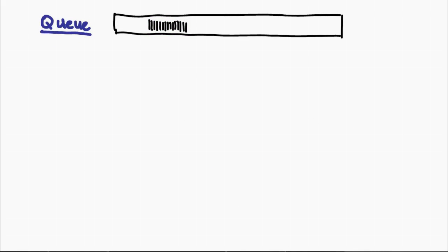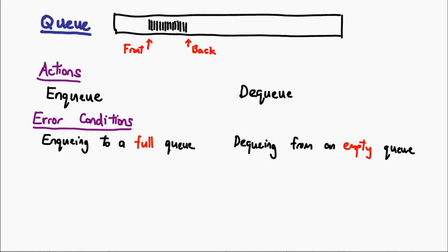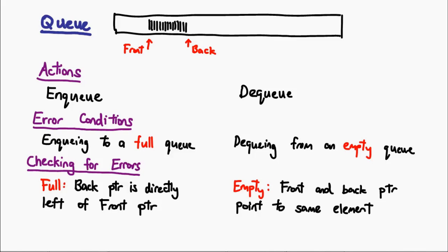And moving on to a queue, essentially we have two operations, enqueue and dequeue. Enqueue adds people to the back of the queue, whereas dequeue removes people from the front of the queue. To implement this, we need both a front and a back pointer. The two error conditions are if we try to enqueue something when the queue is full, or when we try to dequeue something when the queue is empty. To check for either of these conditions, a queue is full if the back pointer is directly left of the front pointer, whereas the queue is empty if the front and back pointers are pointing to the same element.